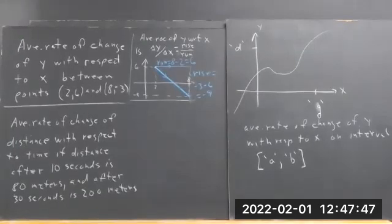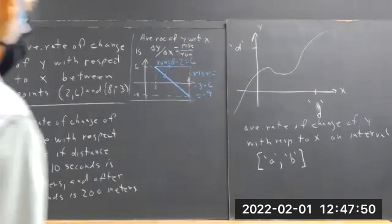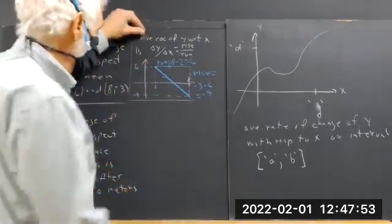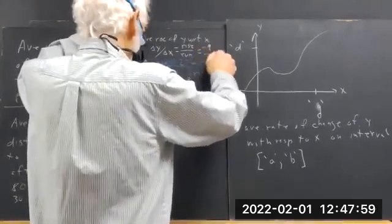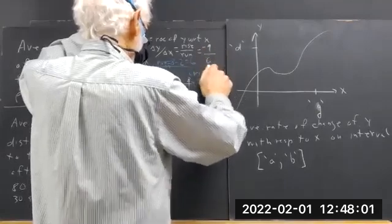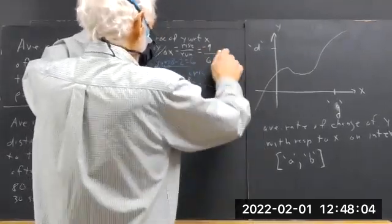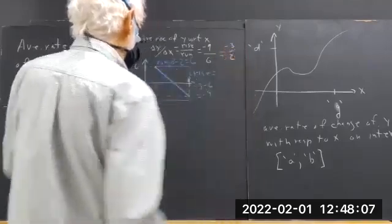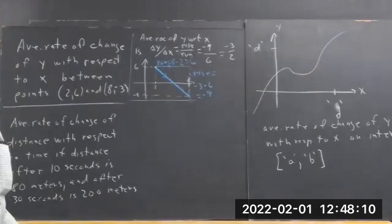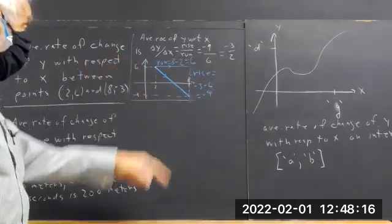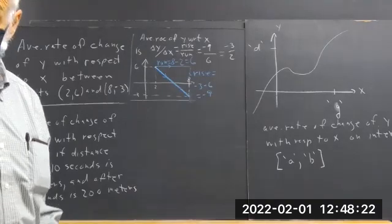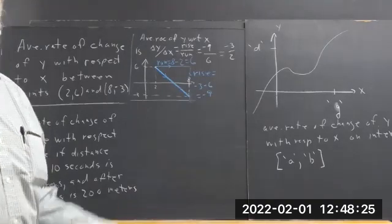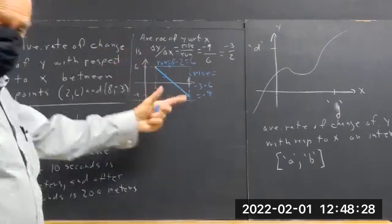The rise over run is negative 9 over 6. That would be a complete solution, including a picture. The picture tells you what values to use. Y2 minus Y1 over X2 minus X1 — if you want to do it without understanding what it means. You should use that formula to check your reasoning.